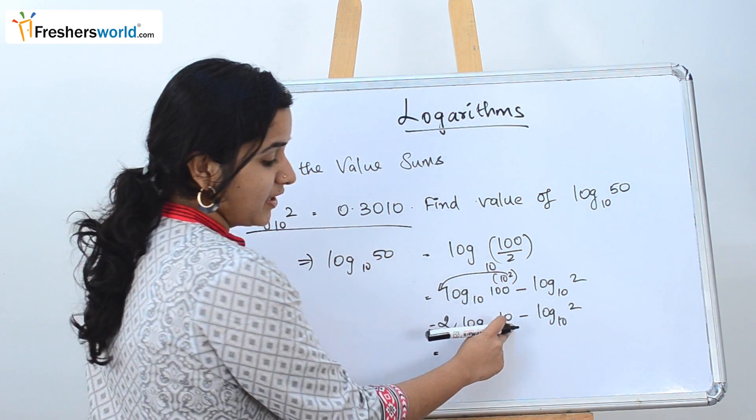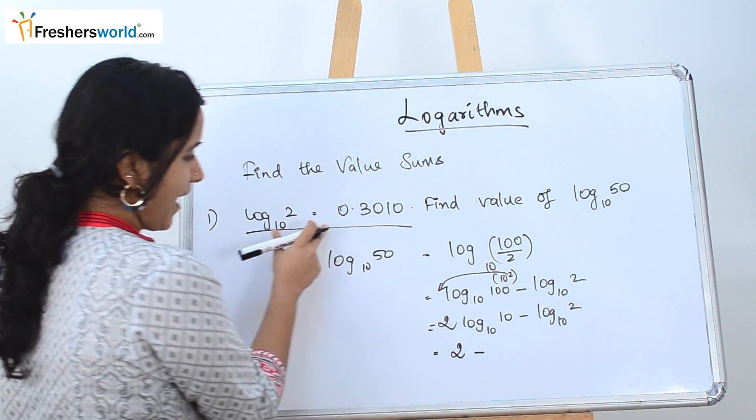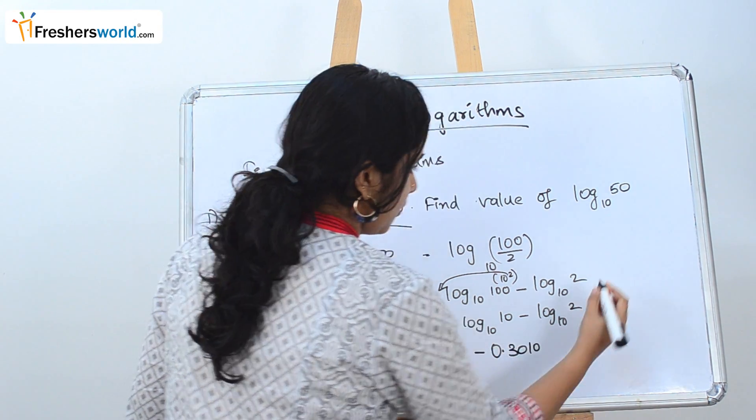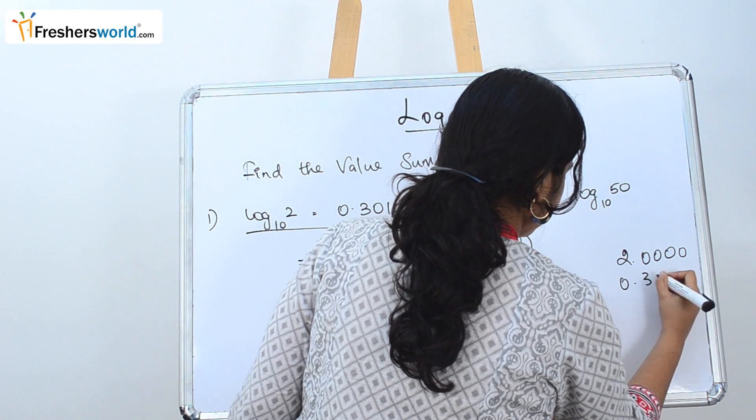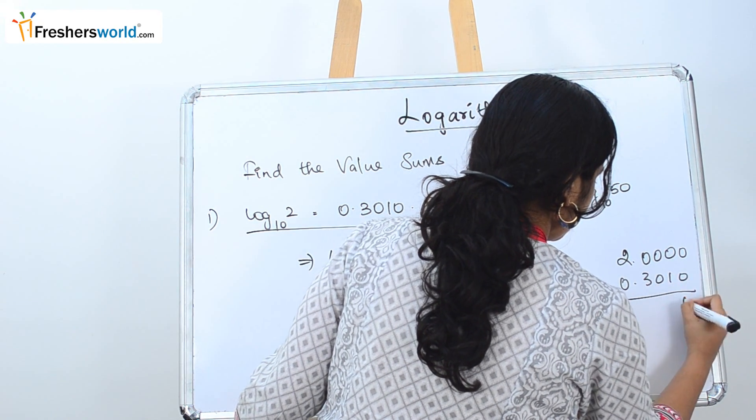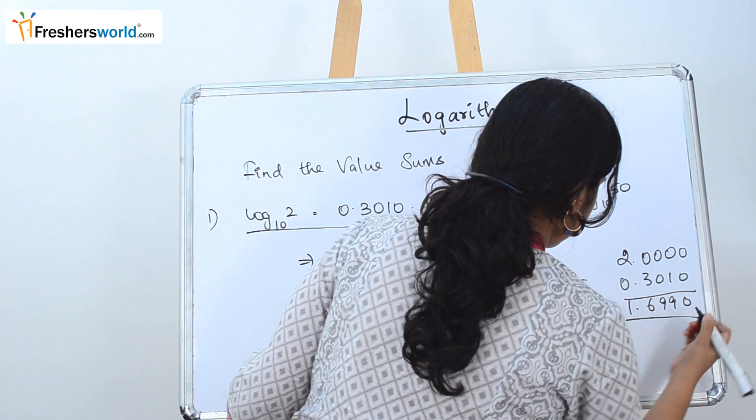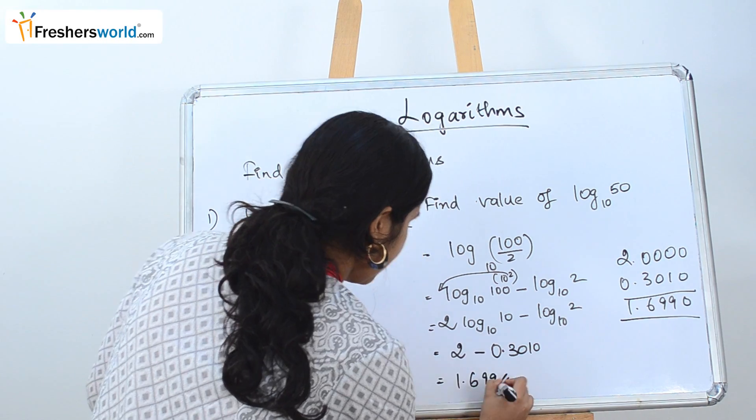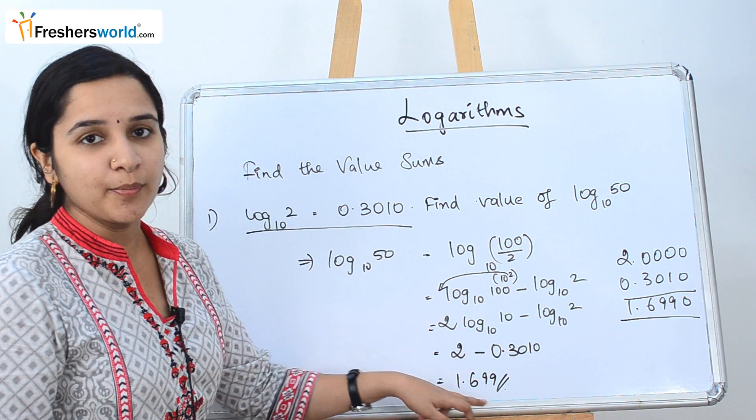So it becomes 2 log 10 to the base 10 minus log 2 to the base 10. Log 10 to the base 10 is nothing but 1. So 2 minus log 2 value is 0.3010. So now we have to subtract it and get the value 1.6990. So the value is 1.699.